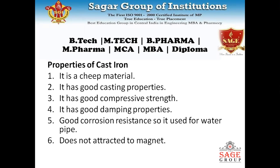The properties of cast iron are: it is a cheap material, it has good casting properties, it has good compressive strength, it has good damping properties, and good corrosion resistance. It is used in pipes and does not attract a magnet, because it is a less purified material.